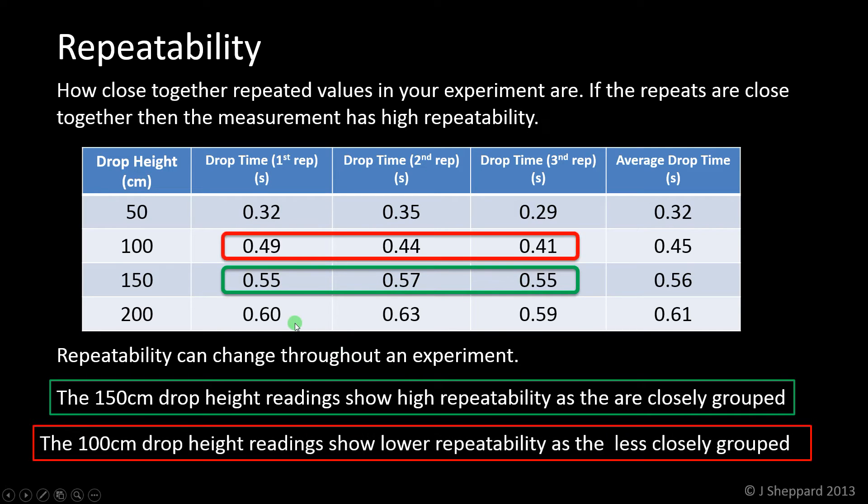On the opposite side, if we look at the data for the 100 centimeter drop height, we've got 0.41, 0.44, 0.49. So 0.08, four times the spread of results as in the bottom one. We'd say the 100 centimeter drop height readings show lower repeatability as they are less closely grouped.